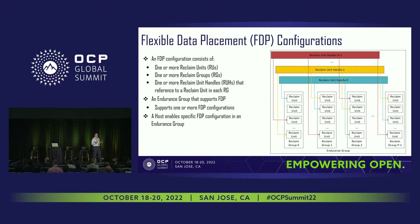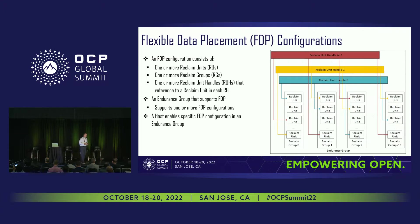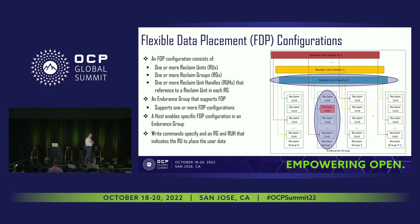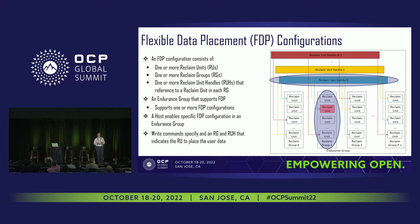By specification, FDP will be disabled by default from the SSD vendor. Hosts have to enable it. There will be a way to say, in this endurance group, go enable a particular configuration. Write commands are going to provide a tuple of information: one is an identifier that identifies the reclaim unit handle targeted for the write, and the reclaim group. That tuple will get you down to the specific reclaim unit being referenced by that reclaim unit handle to actually perform the write.